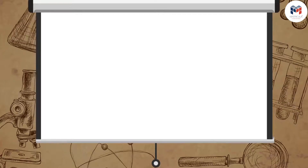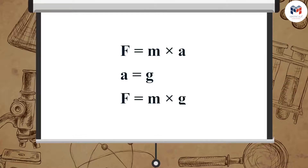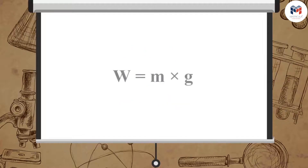As we have learned, force is equal to mass multiplied by acceleration. Here, the acceleration is the acceleration due to gravity. Therefore, we can say F is equal to M multiplied by G. Denoting the weight by W, we can write the equation as W is equal to M multiplied by G.